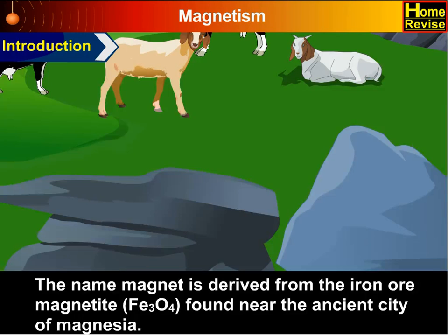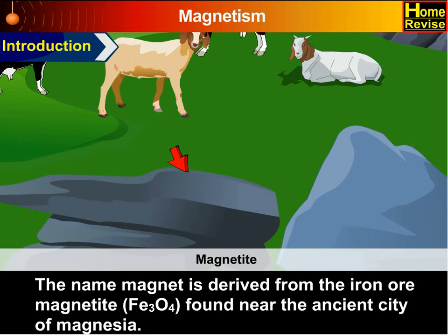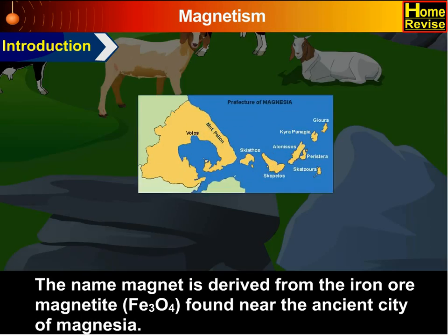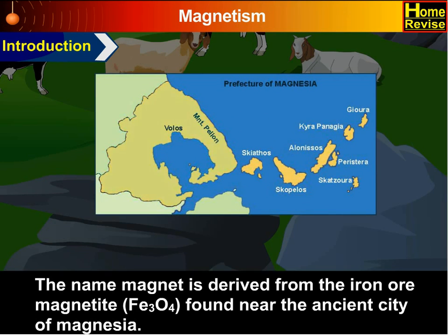The name magnet is derived from the iron ore magnetite, Fe3O4, found near the ancient city of Magnesia.